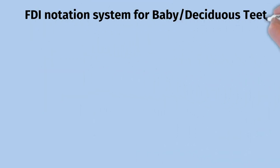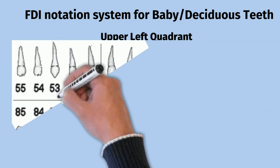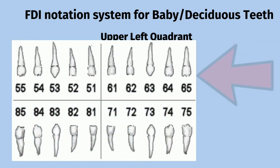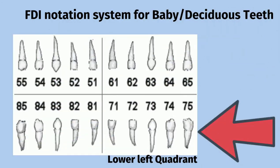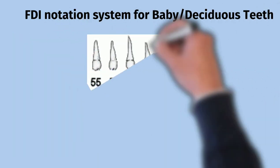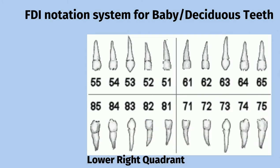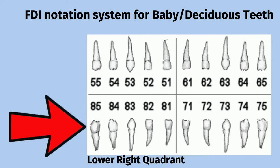For the upper left quadrant of the deciduous teeth, we use number 6 as the first digit. So 6-4 is the upper left first molar. The lower left quadrant is represented by number 7. For example, 7-3 represents the lower left canine. The lower right quadrant is represented by number 8. For example, 8-2 represents the lower right lateral incisor, and 8-4 represents the lower right second molar.